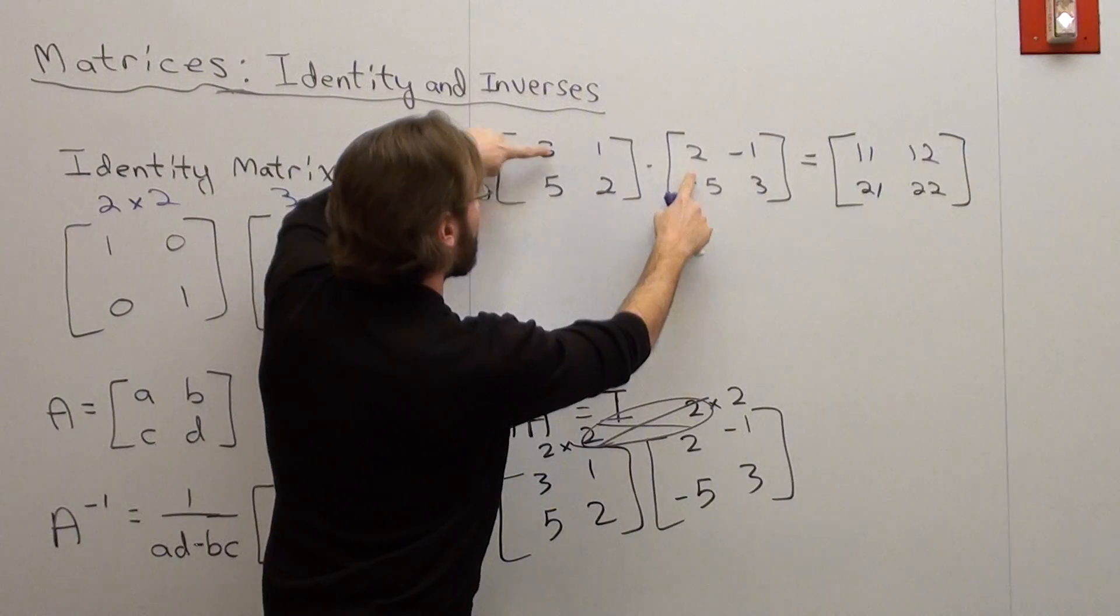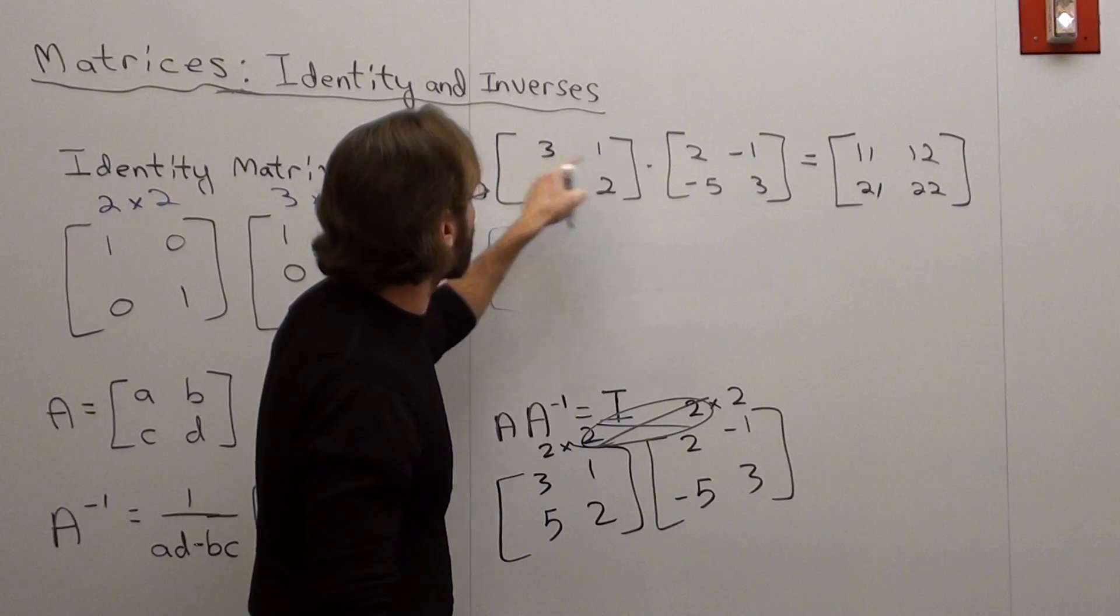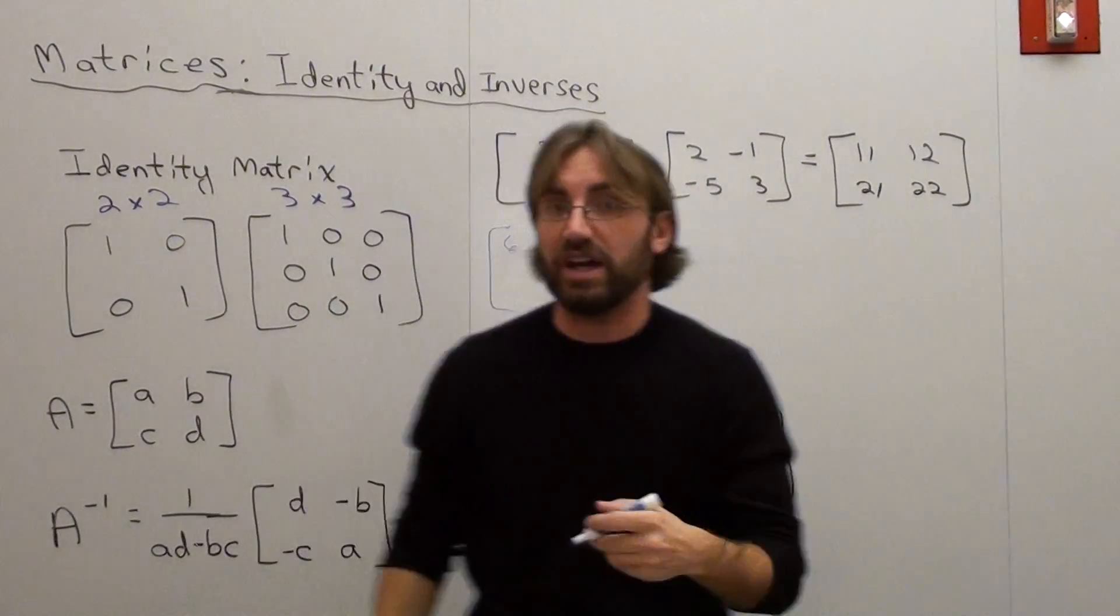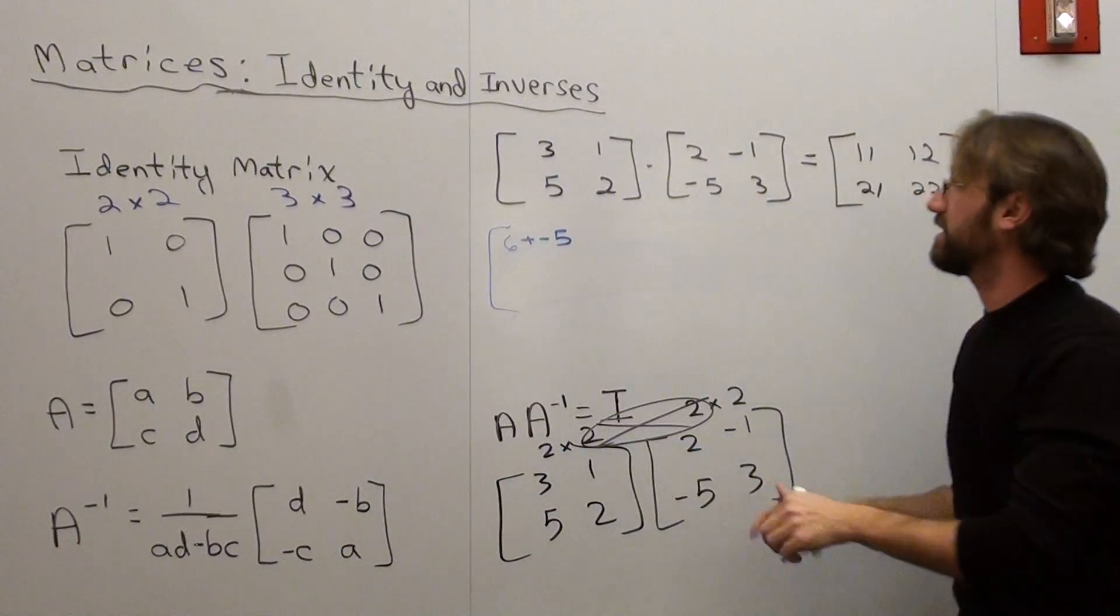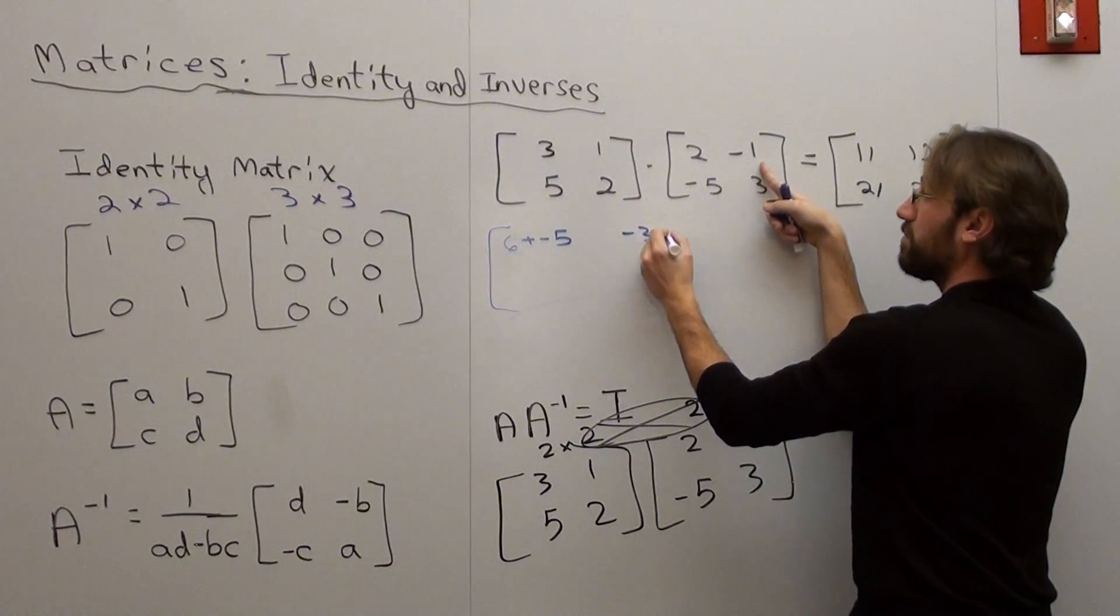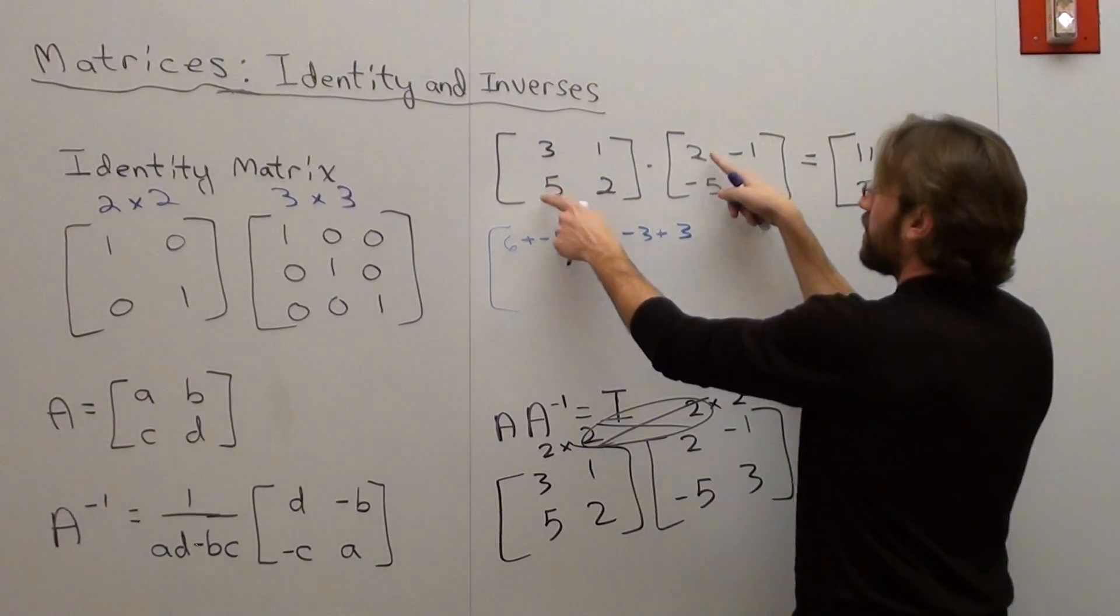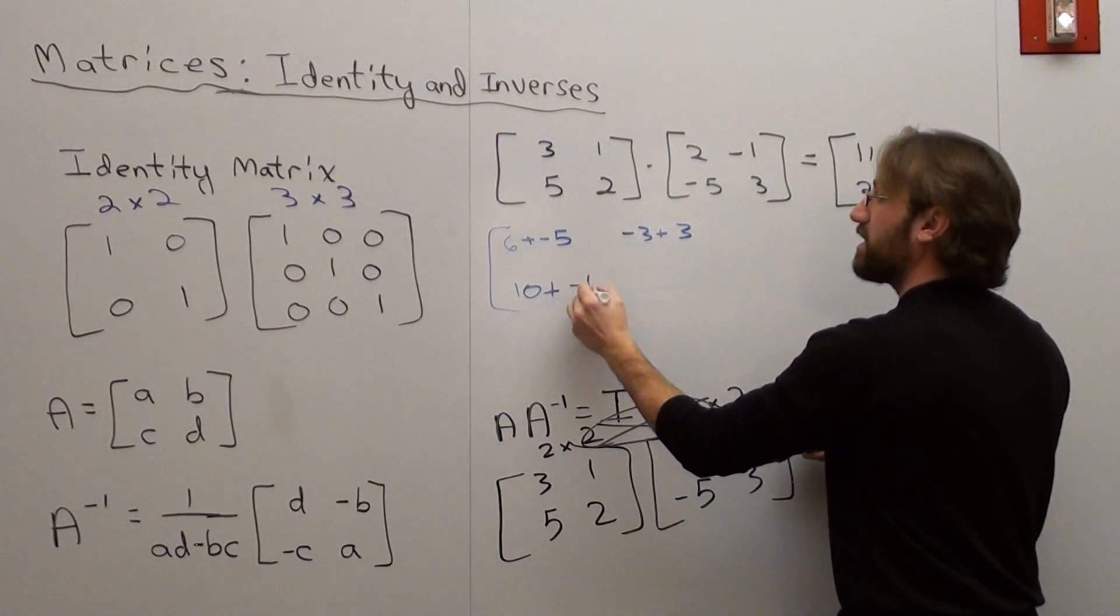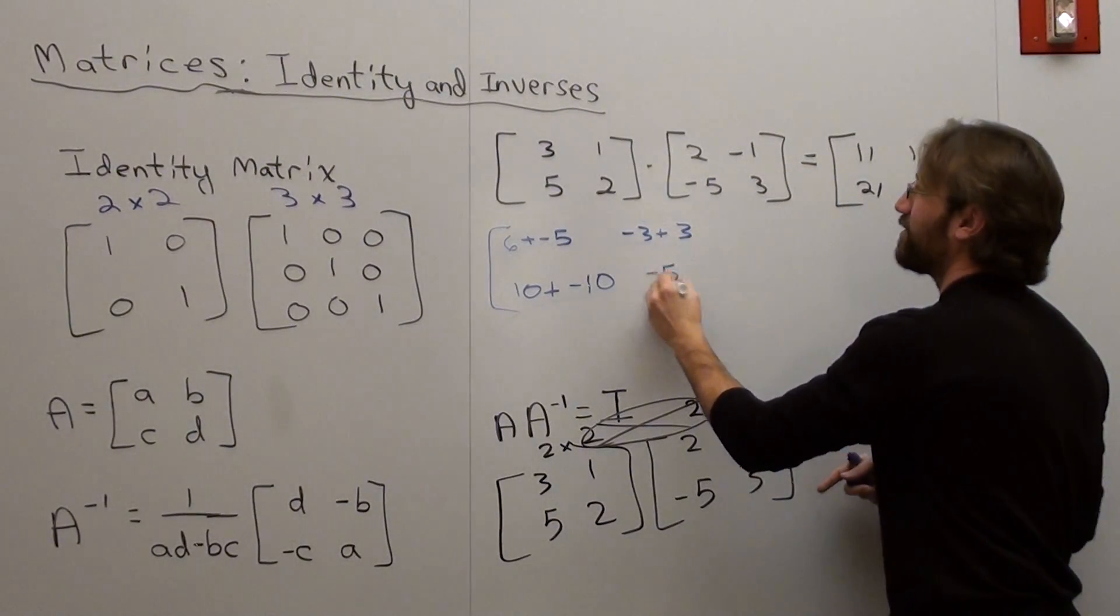So here we go. 3 times 2 is 6, plus negative 5. I'm going to go ahead and write that down. So 3 times 2 is 6, 1 times negative 5 is negative 5. So 6 plus negative 5. That's my first element. Now I'm going to go with the next one. 3 times negative 1 is negative 3, plus 1 times 3 is 3. 5 times 2 is 10, plus 2 times negative 5 is negative 10.